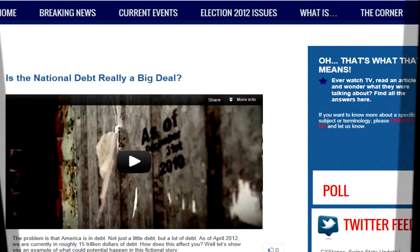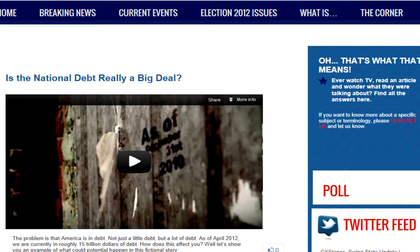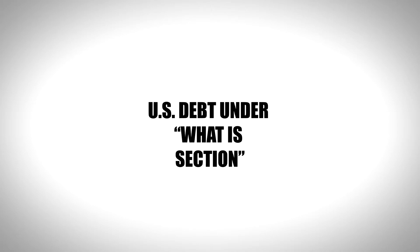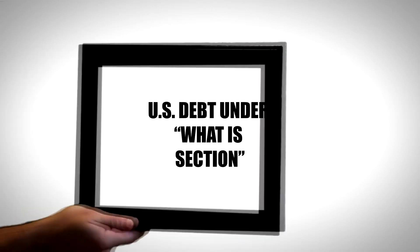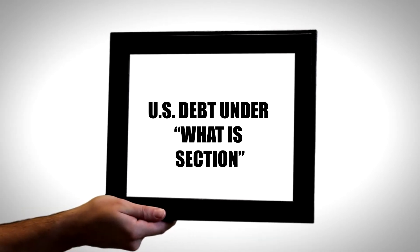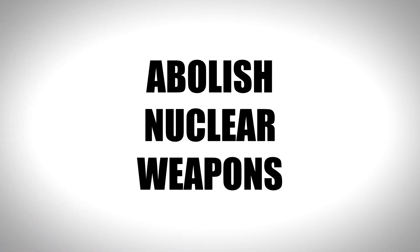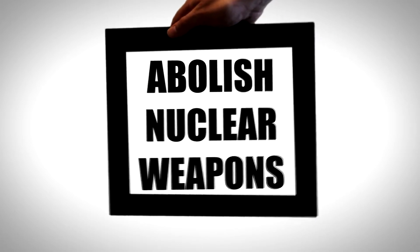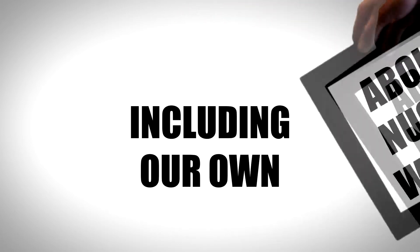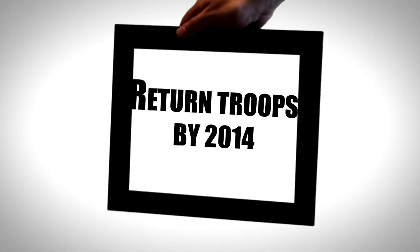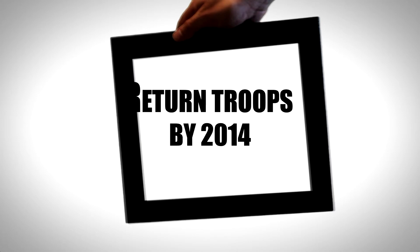If you want to know more about our U.S. debt and its potential devastating effects, please go to U.S. debt under the What Is section. Obama wants to prevent Iran from acquiring nuclear weapons and hurting other countries, including our own. And he also wants to return the troops from Afghanistan by 2014.